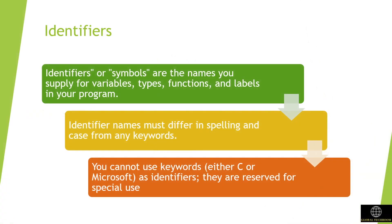Identifiers: an identifier can only have alphanumeric characters and underscores. The first character of an identifier can only contain alphabets or an underscore. Identifiers are also case sensitive in C. Keywords are not allowed to be used as identifiers. No special characters such as semicolons, whitespaces, slash, or comma are permitted to be used in or as an identifier.